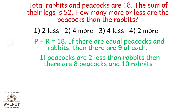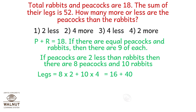If peacocks are 2 less than rabbits then there are 8 peacocks and 10 rabbits. So legs equals 8 into 2 plus 10 into 4, which is 16 plus 40, which is 56 legs. So option number 1 is cut out.